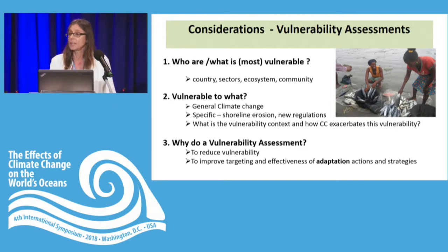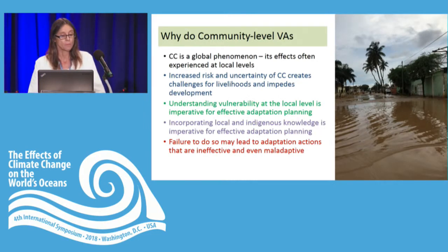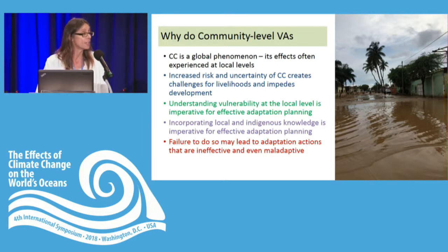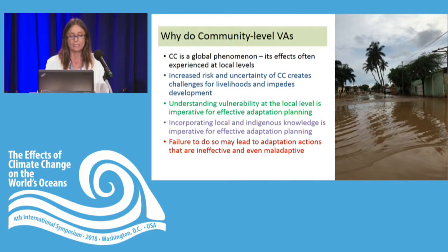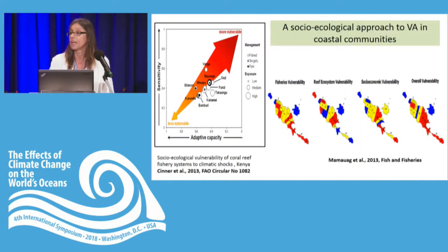We need to ask ourselves why we do these vulnerability assessments. For most of us, we want to reduce vulnerability and increase resilience — essentially to improve the targeting and effectiveness of adaptation actions and strategies. Global climate change is a global phenomenon, but it has its impacts at the local level, creating challenges for food security, livelihoods, and development. It becomes critical to understand vulnerability at the local level, and I'll be arguing that this is an imperative for local adaptation planning, as is the integration of local and indigenous knowledge. Failure to do this may lead to adaptation actions that are both ineffective and could even be maladaptive.